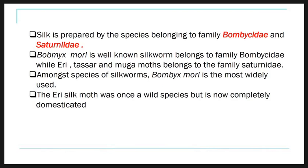Silk is prepared by species belonging to the families Bombycidae and Saturniidae. Bombyx mori is the well-known silkworm belonging to the family Bombycidae, while the Eri, Tassar, and Muga moths belong to the family Saturniidae. Among the species of silkworm, Bombyx mori is the most widely used. The Eri silk moth was once a wild species but is now completely domesticated.